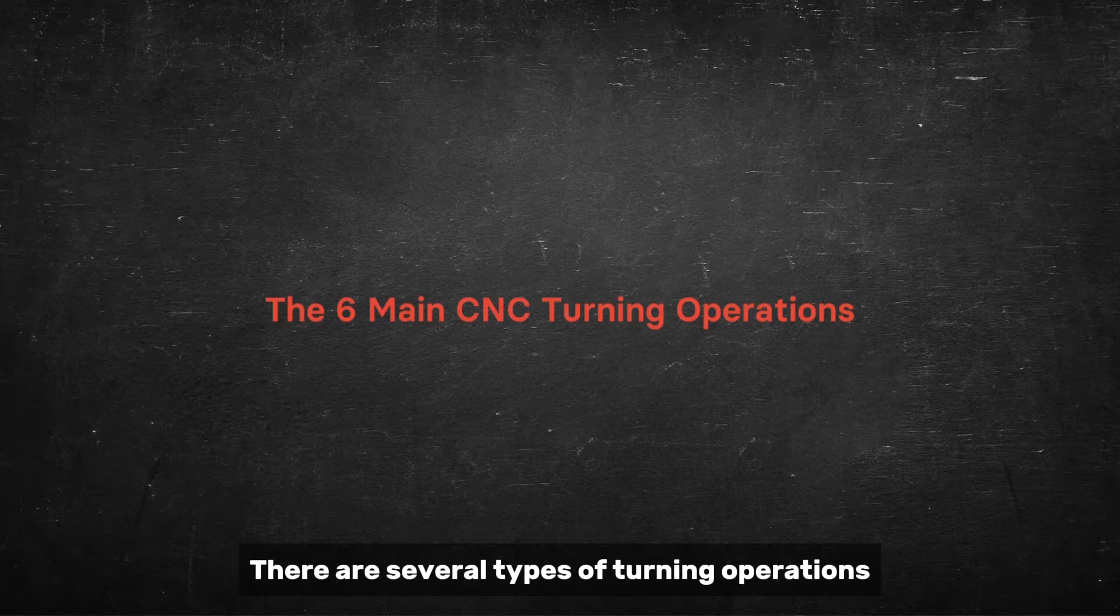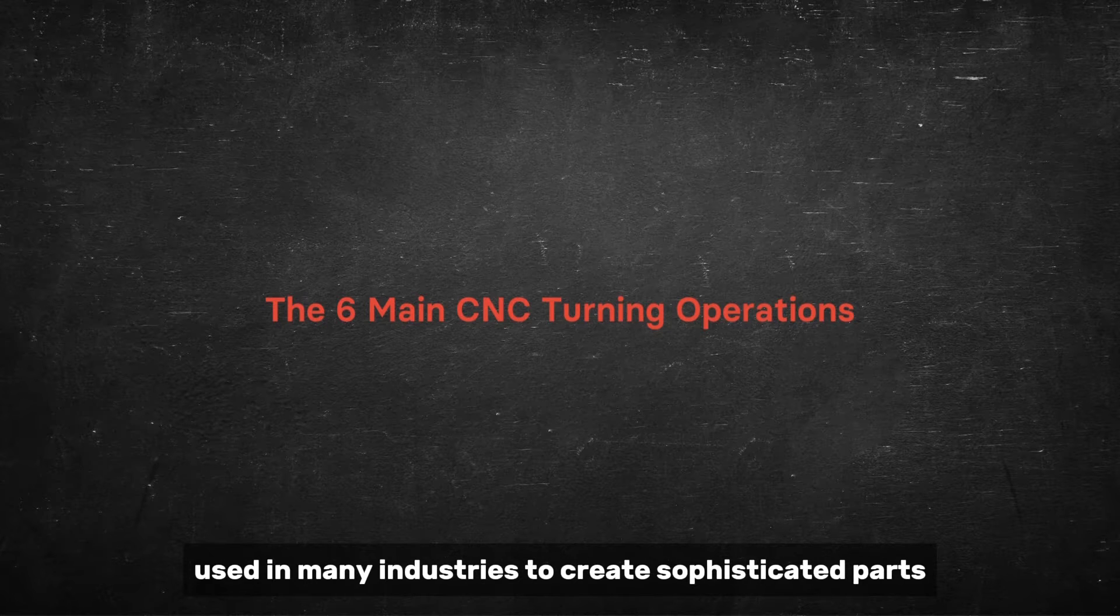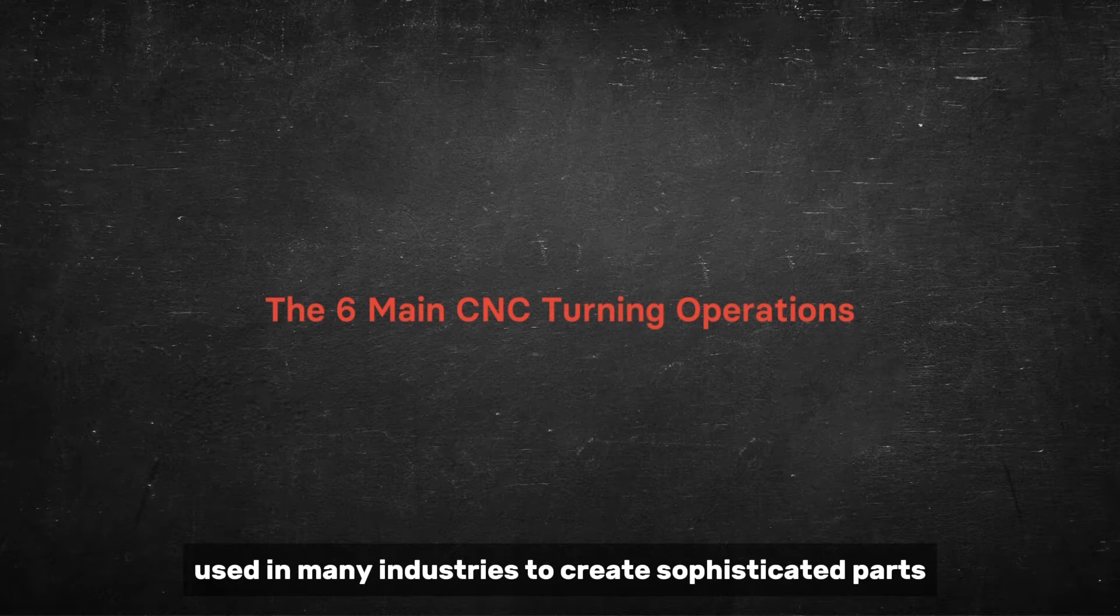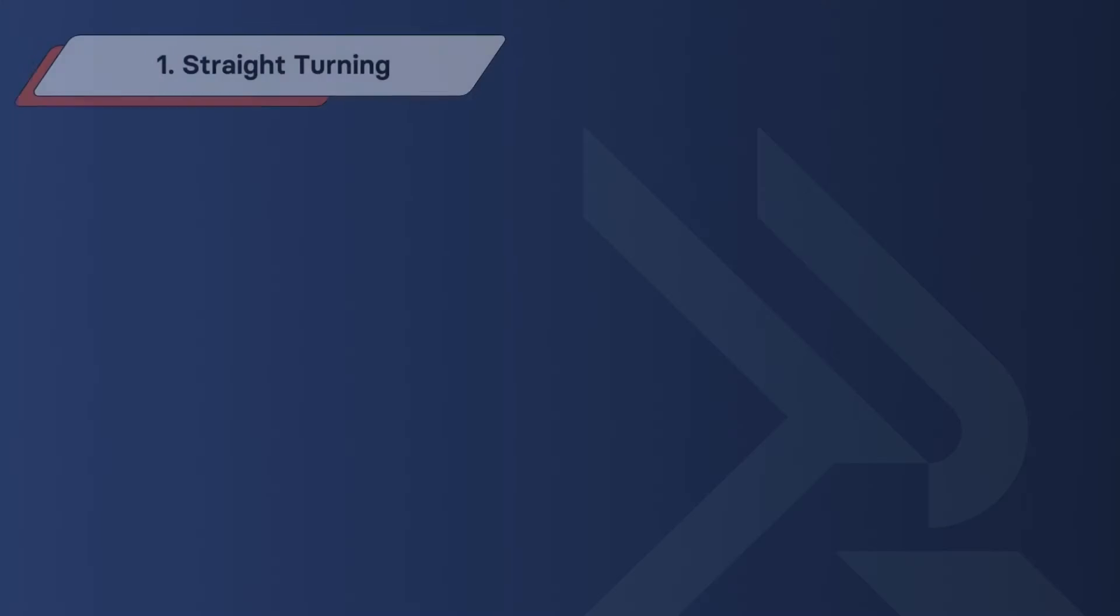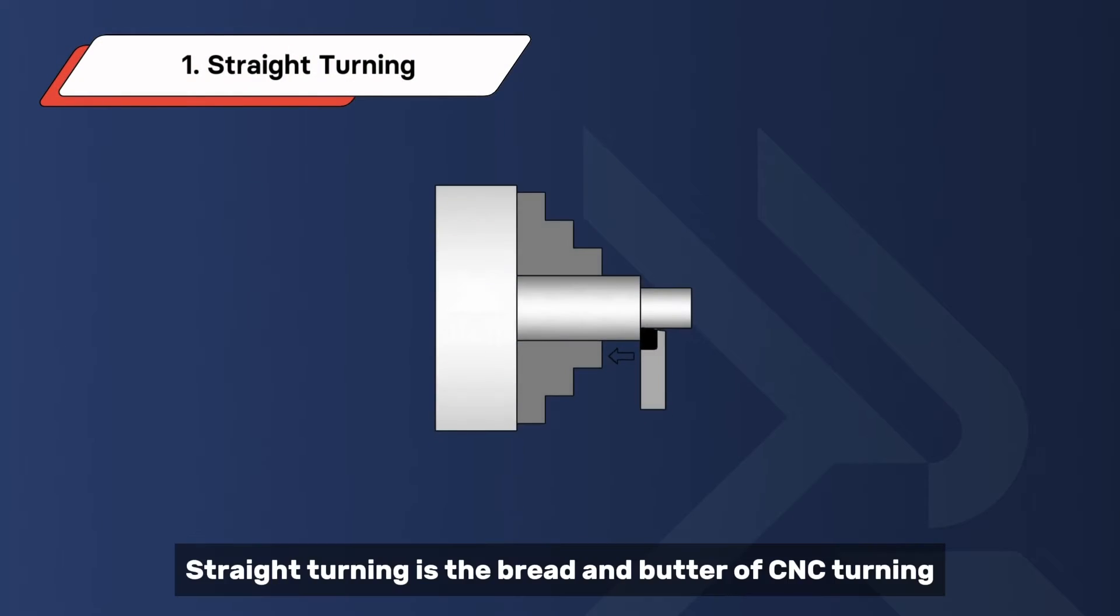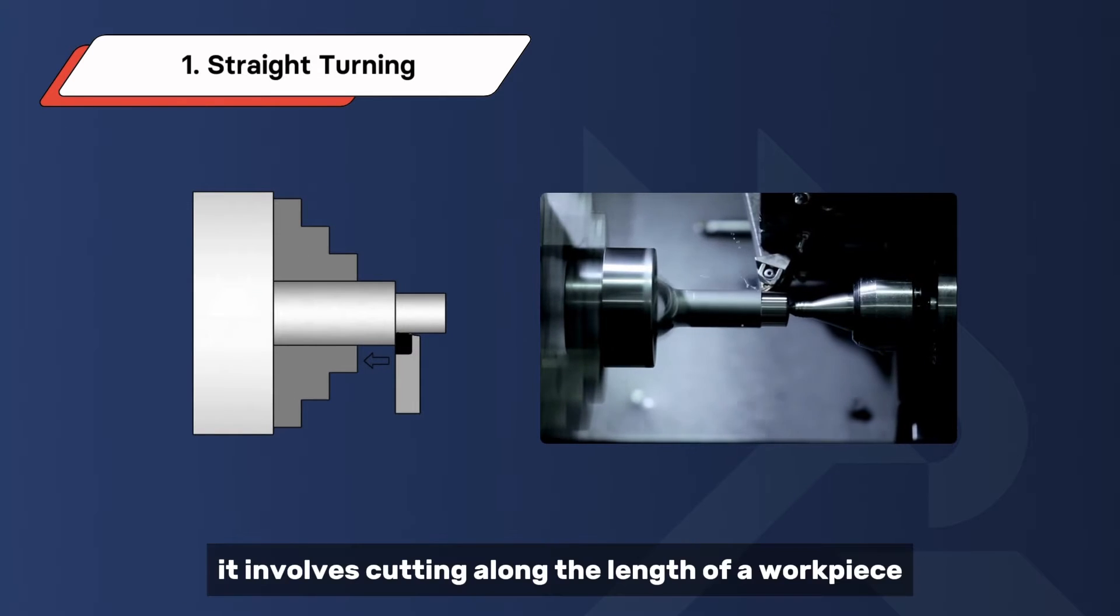There are several types of turning operations used in many industries to create sophisticated parts. Let's explore the six most common turning operations. Straight turning is the bread and butter of CNC turning.